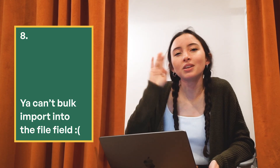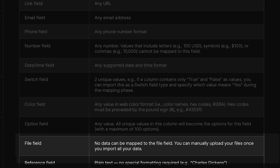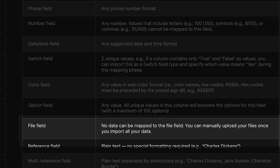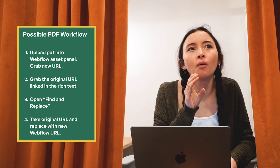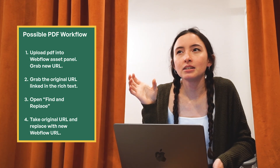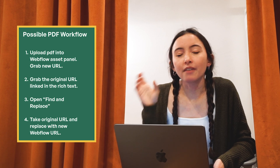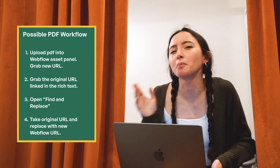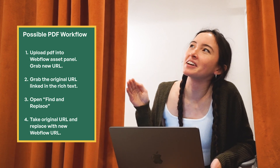Number eight — the file field. We love the file field, but you can't import stuff into the file field. It is so frustrating, I'm so sorry. So how do you handle PDFs that are linked? I would find a way to do it manually: take those PDFs, upload them to Webflow, grab the link, and then find and replace in your CSV anywhere that PDF is mentioned. I've done this once and it worked. If somebody has a better way of addressing PDFs, let me know — I still don't have a premium solution for that issue.